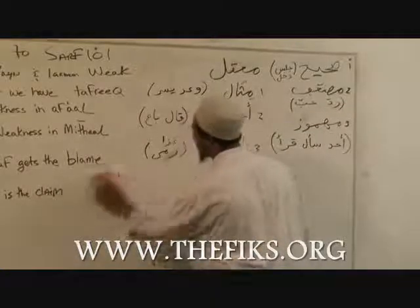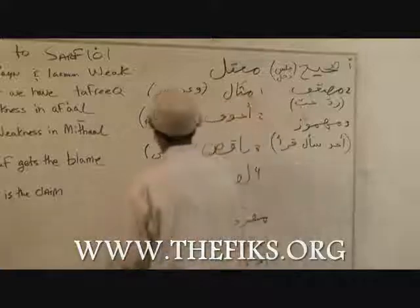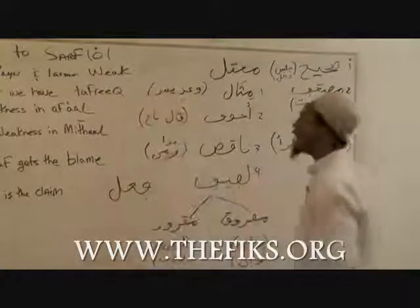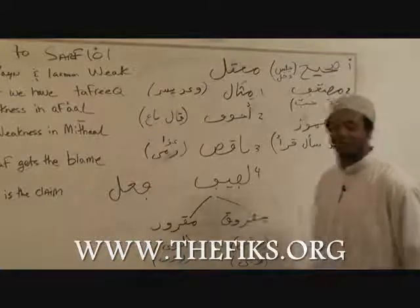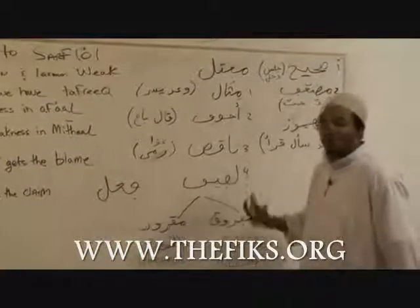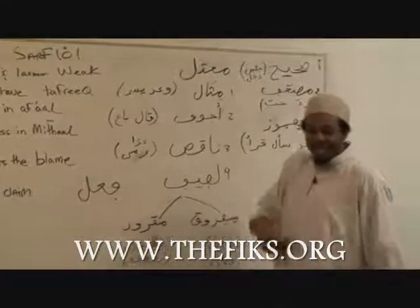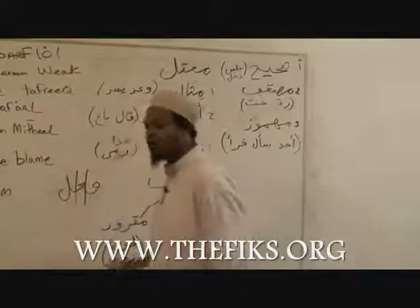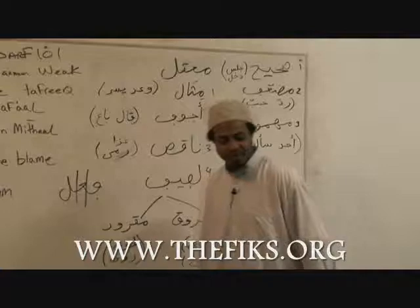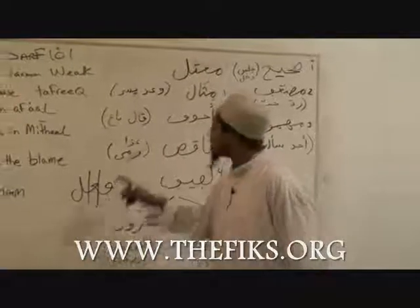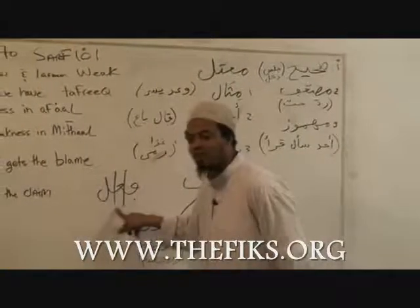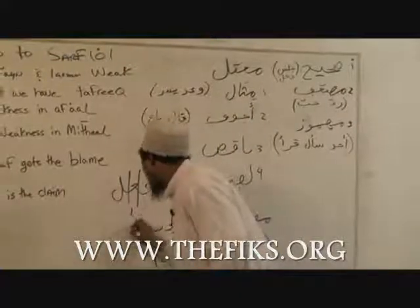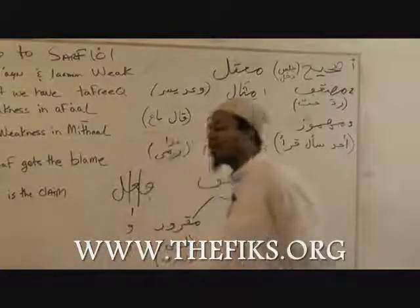The next type of fa'alun — we're talking about the mu'tal — on the fa'ala scale, is what we call the ajwaf. Ajwaf — it's from jauf, meaning center, the stomach. That's because the stomach of this fa'alun is the a'in, right? This is the jauf of it, and it's called ajwaf when the a'in of the fa'alun has a weak letter: an alif, a wa, or a ya.